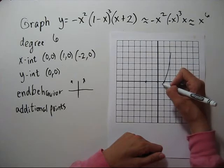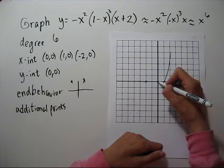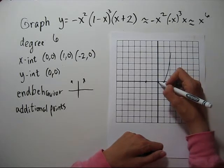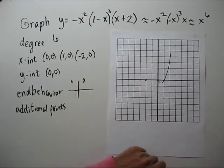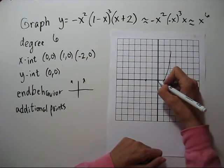Now I've got to go up to zero. That's my next intercept. Now I've got to ask myself, do I touch or cross at zero? My multiplicity is two. So I'm just going to touch. Got to go back down.